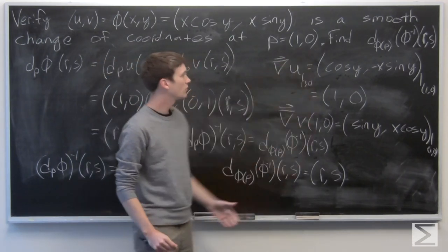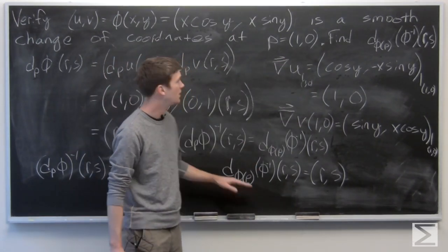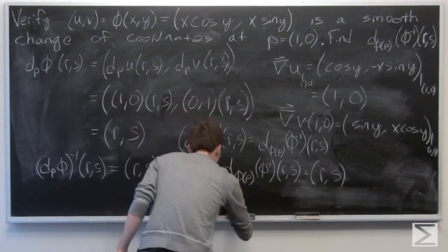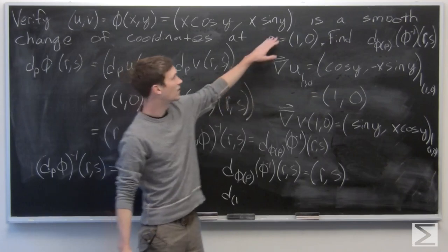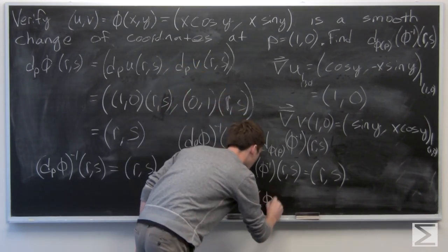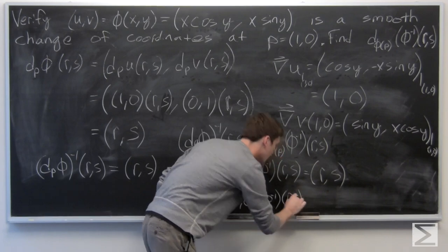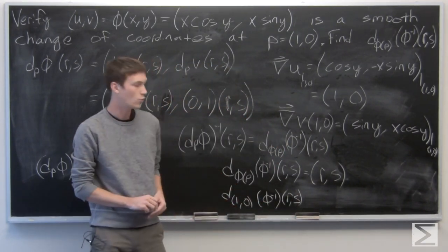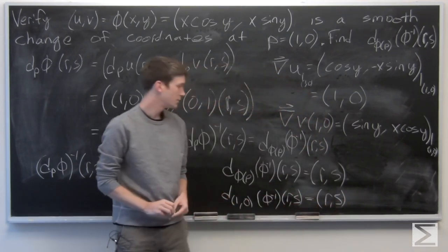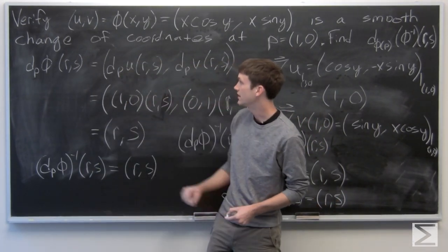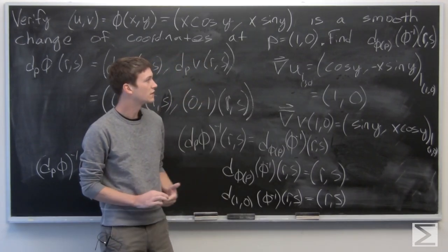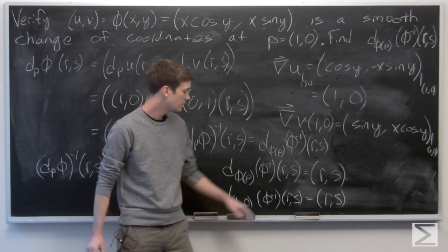Now we know p = (1, 0), so we need to calculate phi of p. phi(1, 0): x is 1, cosine of 0 is 1, so the first component is 1; sine of 0 is 0, so the second component is 0. Therefore phi(p) = (1, 0). So the total derivative of phi inverse at the point (1, 0) with respect to (r, s) is (r, s). We've verified that phi is a smooth change of coordinates locally at p = (1, 0), and found that the total derivative of phi inverse at phi of p with respect to (r, s) is (r, s).